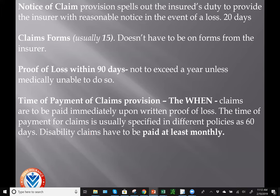The time of payment of claims provision is the 'when' provision — it addresses when claim payments are to be made. Claims are to be paid immediately upon written proof of loss, usually within 60 days, unless it is for a disability claim. We learned earlier that disability claims have to be paid at least monthly.